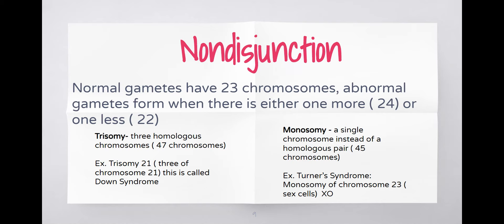An example of trisomy you may be aware of is Trisomy 21, which we normally refer to as Down syndrome. It means a person with Down syndrome has three chromosomes at the 21st chromosome. Monosomy means we're missing something - instead of having a pair of chromosomes we have a single chromosome, resulting in 45 chromosomes instead of 46. An example of this is Turner syndrome, where a person produces a sex cell with just an X and nothing else - they just have one X, so their sex cell is missing a homologous pair.